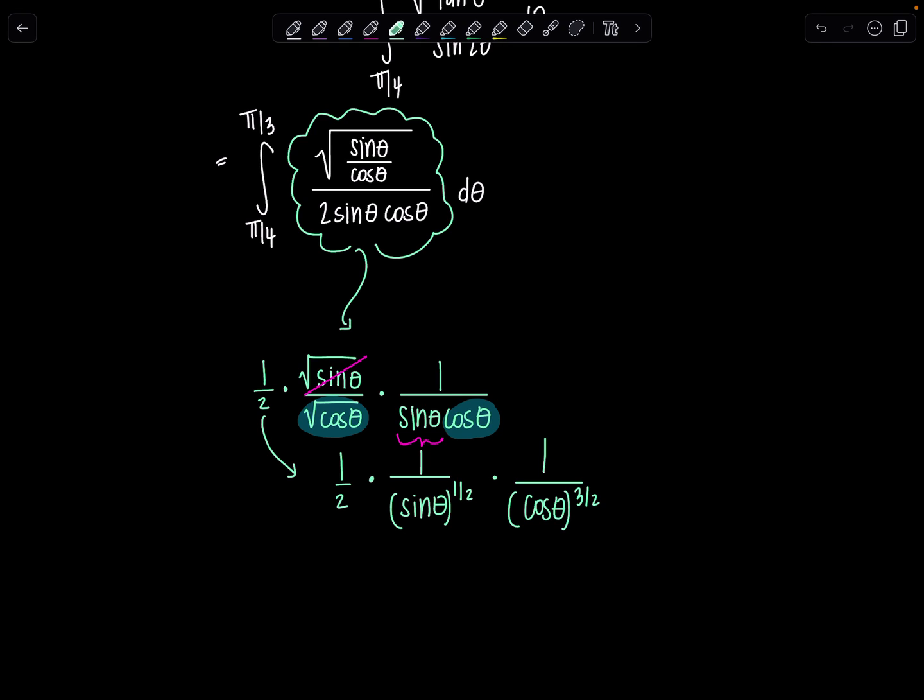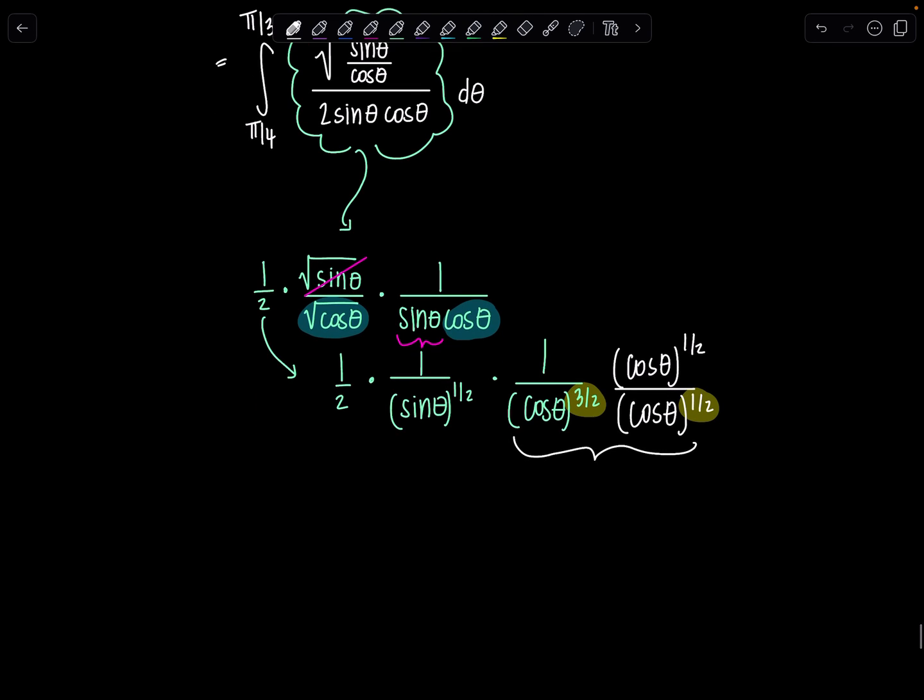The next step is a wee bit funky. I multiplied numerator and denominator by another square root of cosine theta or cosine theta to the one half power. I can group these together. The cosine theta to the three halves and one half in the denominator, adding their exponents, I get cosine theta to the four halves, which is cosine theta squared. And then this cosine theta to the one half and this sine theta to the one half, I'm going to group them together, cosine theta over sine theta, put it all together to the one half, and then that other one half is still outside.